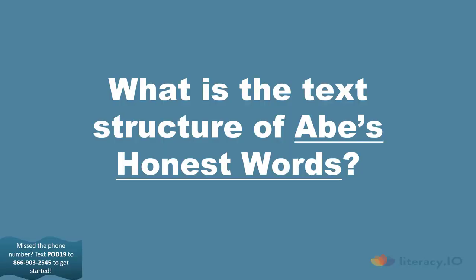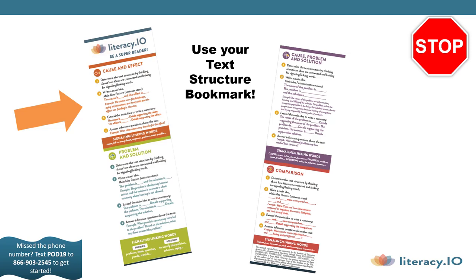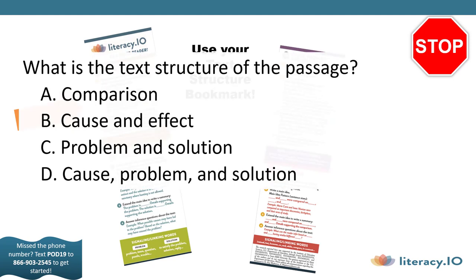I hope you enjoyed that book, Super Readers. What is the text structure of Abe's Honest Words? Was there a problem? Was it solved? Were two or more things compared? Here are some of the things I heard in the story: evil, hideous, slavery, did not fit, against, opposed, freed. Use your text structure bookmark to help you figure out the text structure. What is the text structure of the passage? A: Comparison. B: Cause and Effect. C: Problem and Solution. D: Cause, Problem, and Solution.